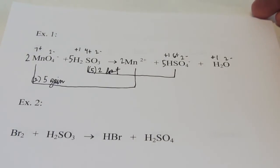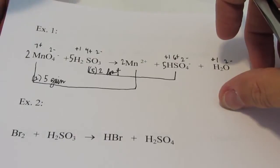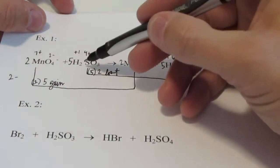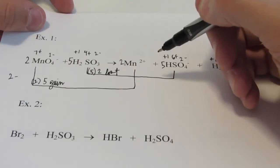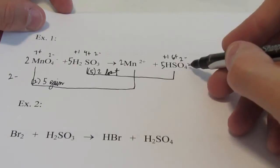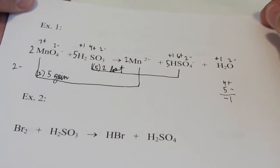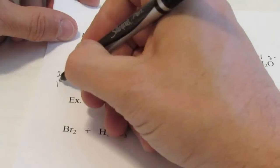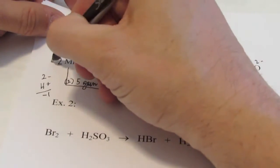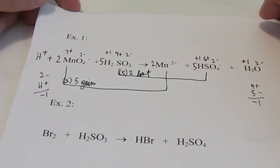Step three: balance the ionic charge. It doesn't say whether this is acidic or basic, so we assume acidic, and we balance the charge using protons. Permanganate is an ion — I have two of those for two negatives on this side. Sulfurous acid is not charged. On my product side I have two Mn²⁺ for four plus, and five hydrogen sulfates each at one negative — so the sum on that side is negative one. The charge does not balance, so I need to add one proton to the reactant side. Step three is done.